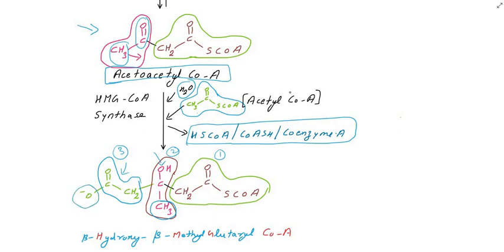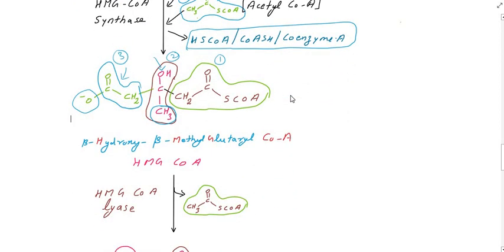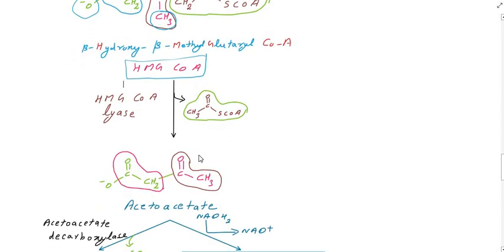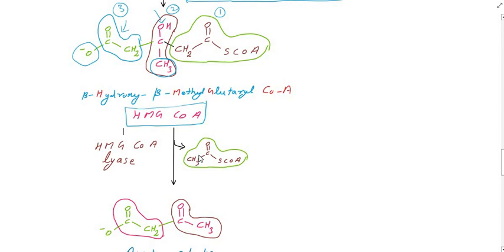The resulting compound is beta-hydroxy, beta-methyl glutaryl-CoA — also called HMG-CoA. HMG-CoA is very significant and important in this pathway. Next, HMG-CoA lyase acts on HMG-CoA; this enzyme is responsible for bond-breaking.